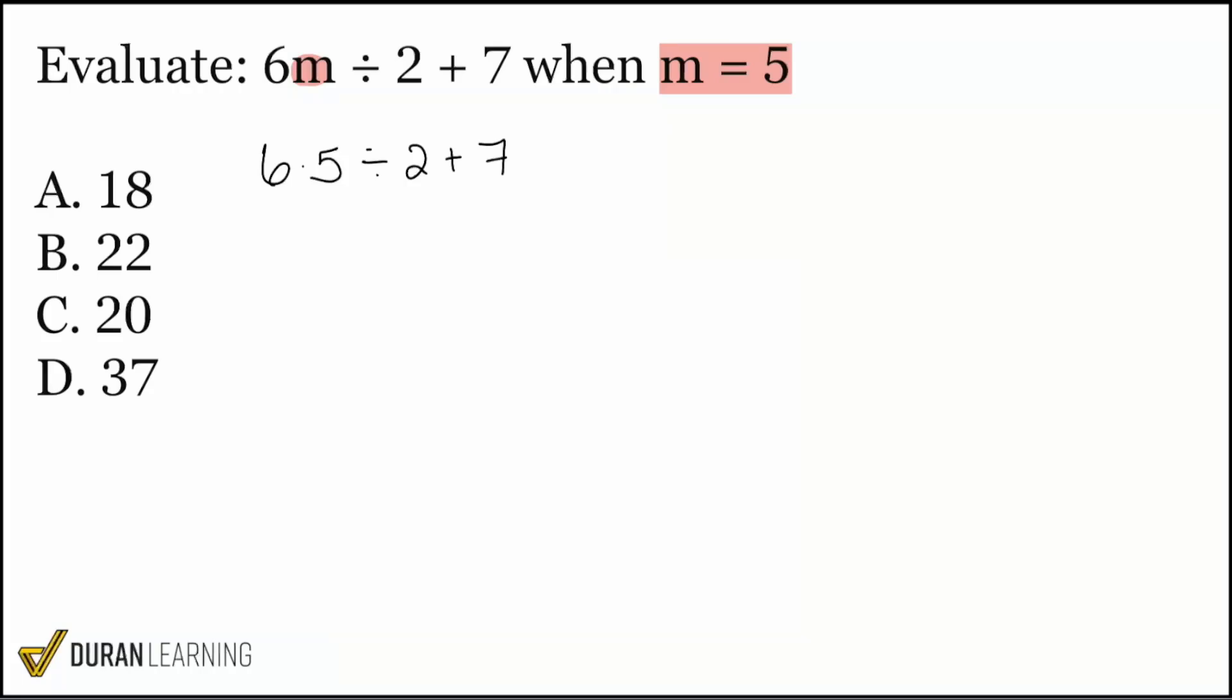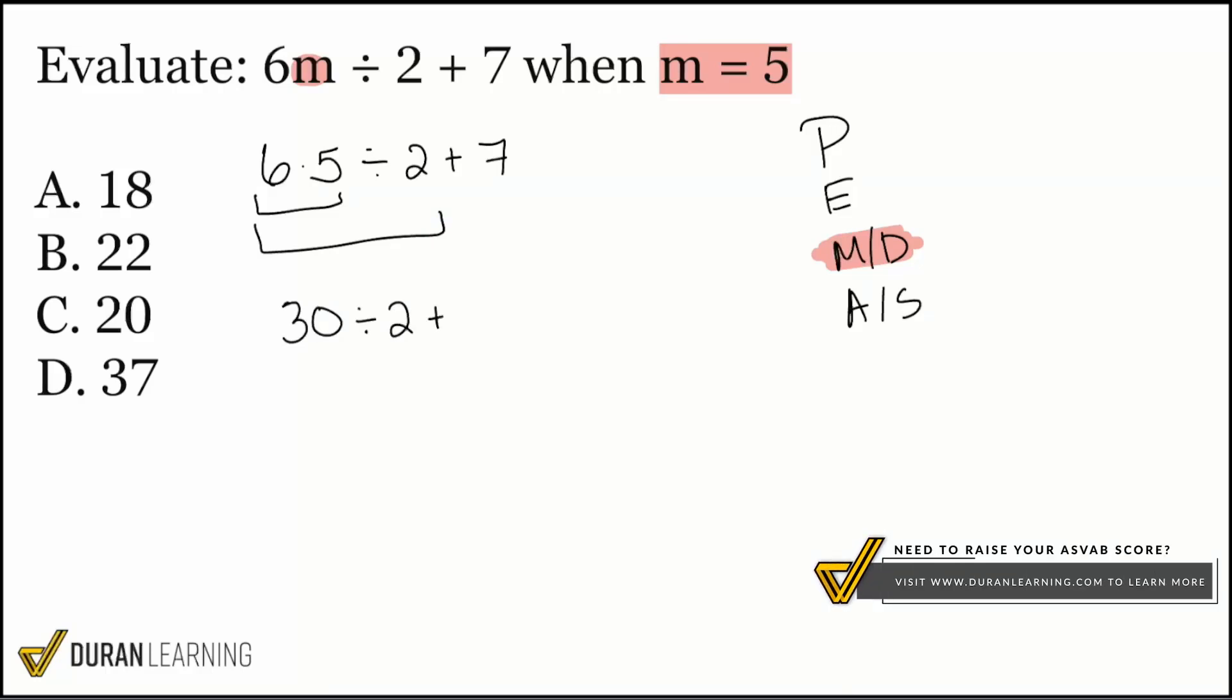We have multiplication here, then division there, and then we'll add at the end. But remember, when it comes to multiplication and division with your PEMDAS, remember that multiplication and division, it's whichever comes first, left to right. So here, what we're seeing is multiplication first, then we divide the result. So 6 times 5 is 30. And then we'll divide by 2. 30 divided by 2 gives us 15. 15, and then we have 15 plus 7, and that will end at 22.